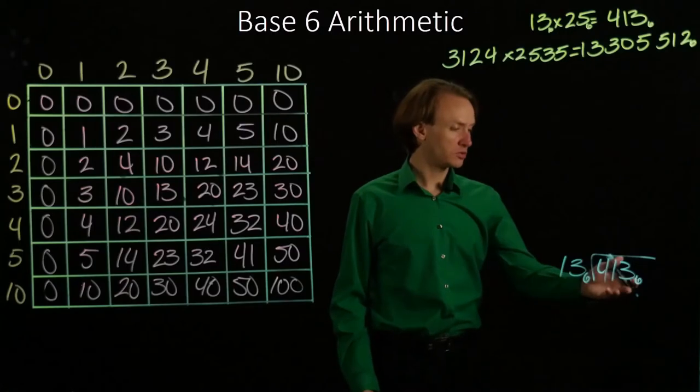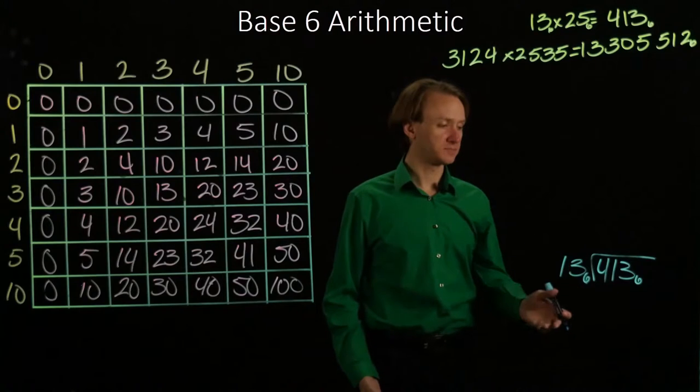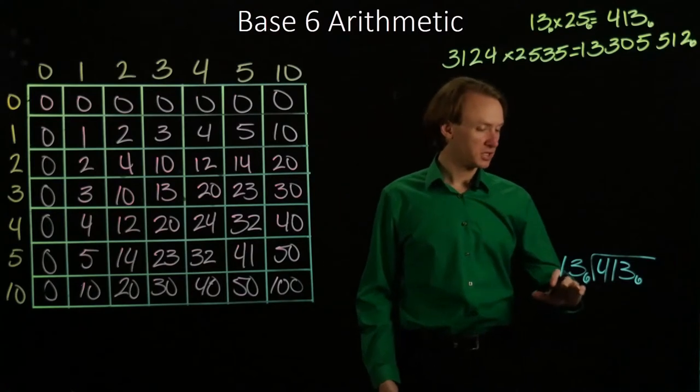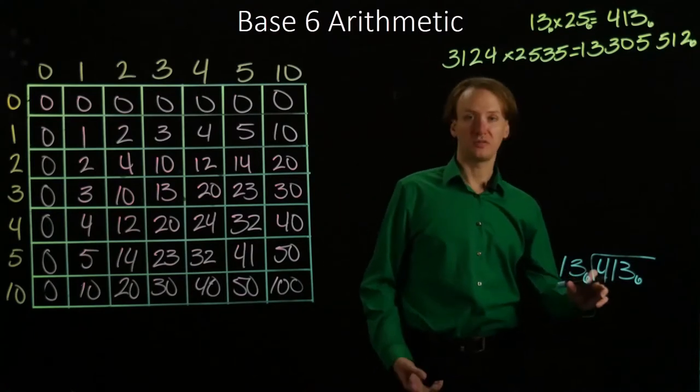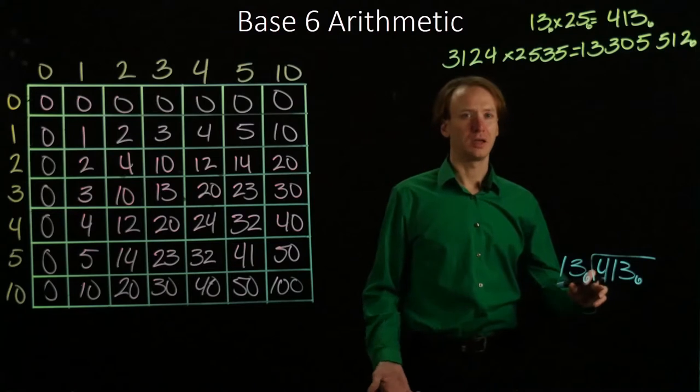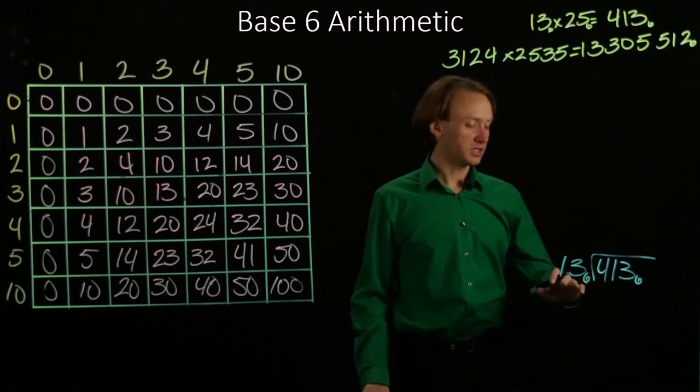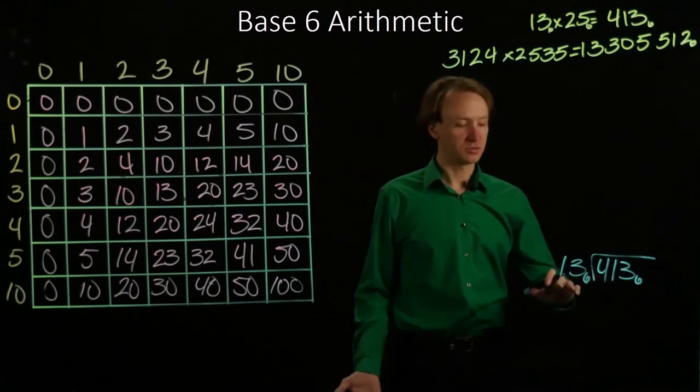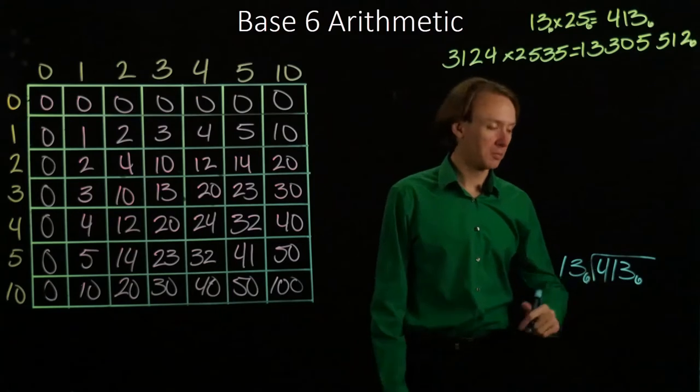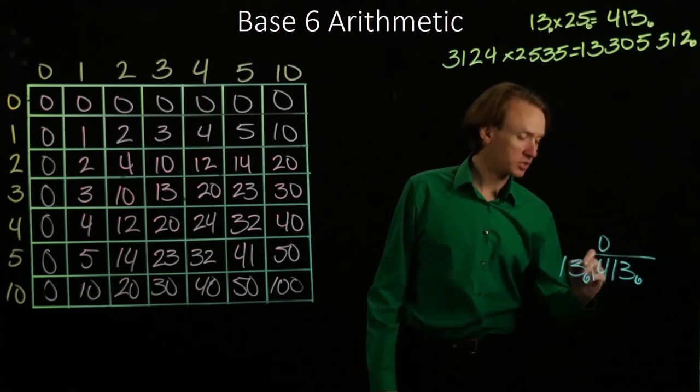So I'll divide 413 by 13. First thing I can notice is that 13 is not going to divide into 4 in any base. This has 2 digits, this only has 1. 13 is clearly larger than 4.